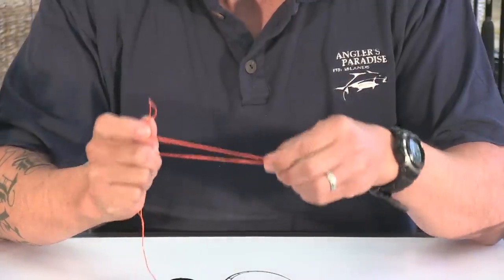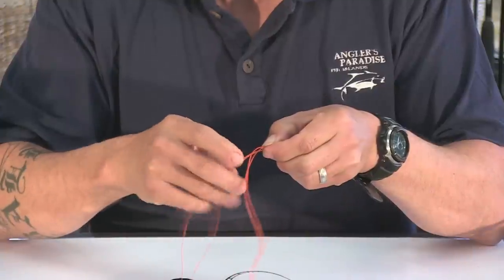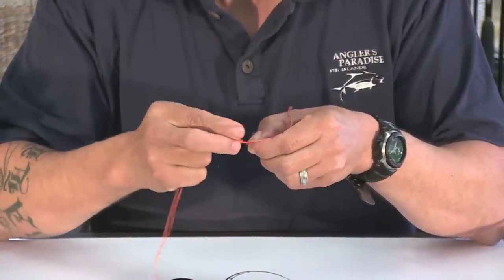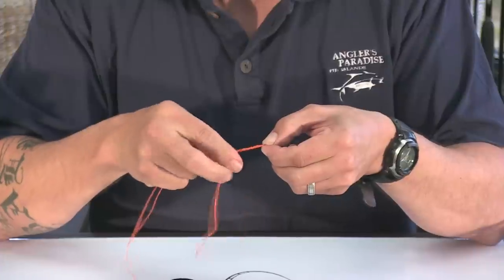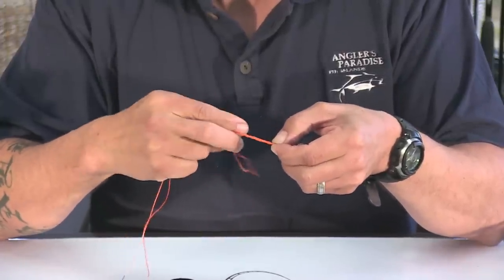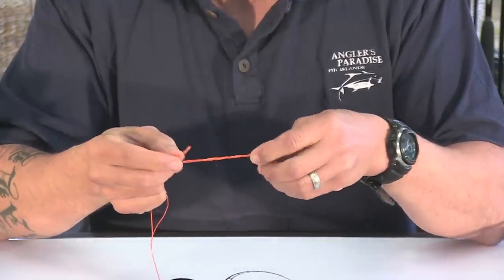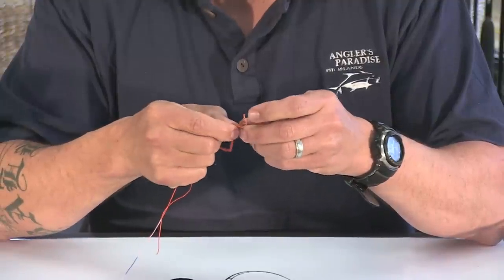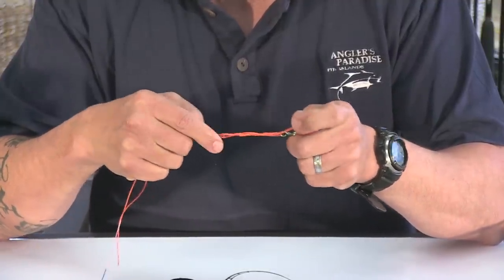And like the clinch knot, pinch it there and we just wind up five times up to your mainline. One, two, three, four, five. And then we just go back through that little loop I've got there. We go through there.